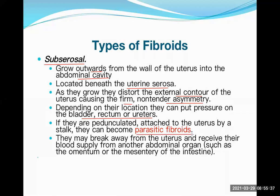An important exam point is parasitic fibroid. Subserosal fibroids can be pedunculated — they have a stalk. Sometimes that stalk detaches from the uterus, and the fibroid attaches to another intra-abdominal organ such as the omentum or mesentery, establishing a blood supply from that organ and continuing to grow. This is known as parasitic fibroid.